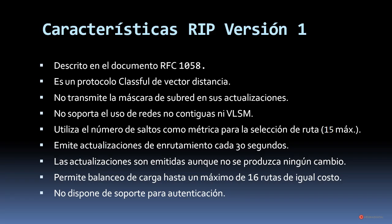Empezamos recordando las características de la versión 1 de RIP, descrito en el RFC 1058. Es un protocolo classful de vector distancia que no transmite la máscara de subred en sus actualizaciones, no soporta redes no contiguas ni VLSM. Utiliza el número de saltos como métrica hasta 15 máximos, emite actualizaciones cada 30 segundos aunque no haya cambios en la topología, permite balanceo de carga hasta 16 rutas de igual costo y no dispone de soporte para autenticación.